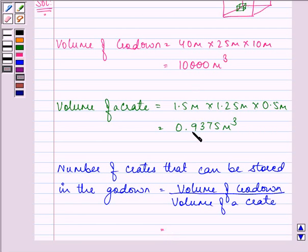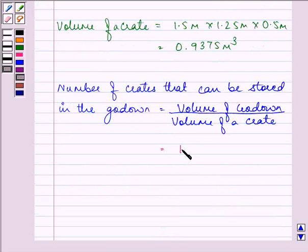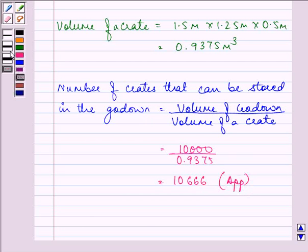Let us substitute these two values. It is equal to 10,000 divided by 0.9375 and it is equal to 10666 approximately.